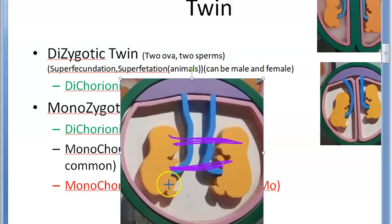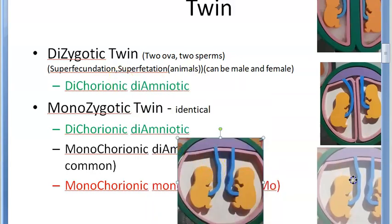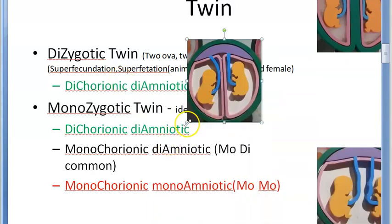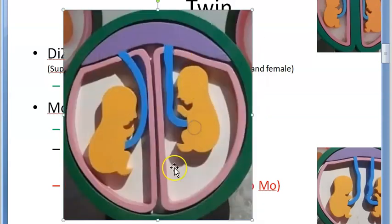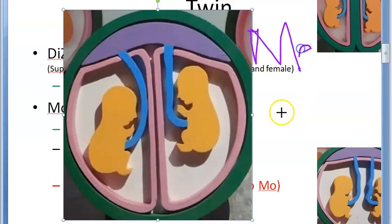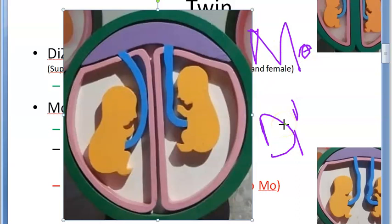Conjoined twins can be attached at the head (craniopagus), at the thorax (thoracopagus), have posterior fusion (pyopagus or isthiopagus), or be attached at the caudal end. Looking at a photo: one placenta is visible, so it is monochorionic; two amniotic sacs are visible, so it is diamniotic — monochorionic diamniotic, a monozygotic twin.